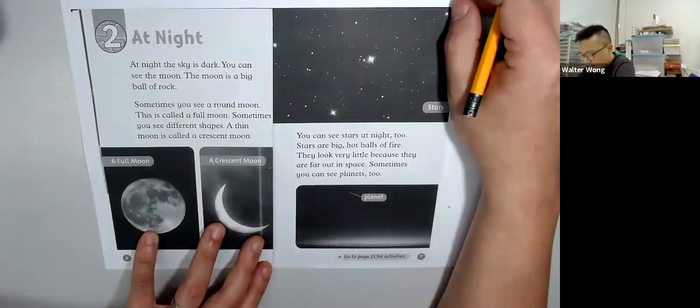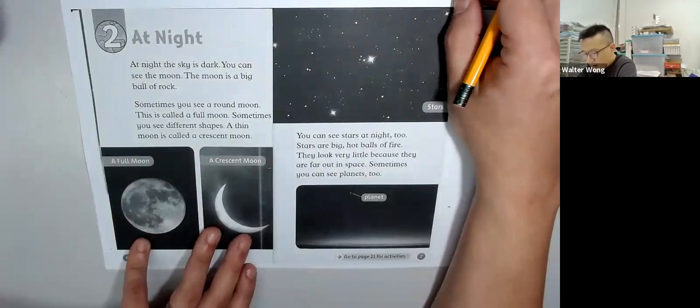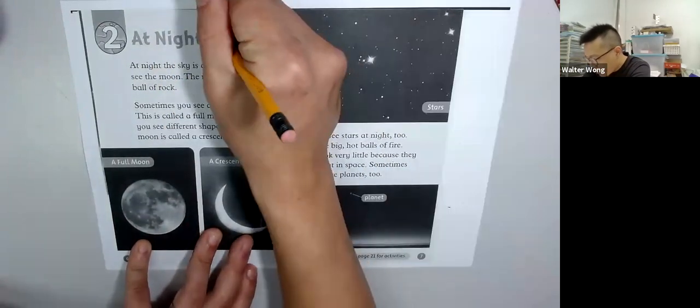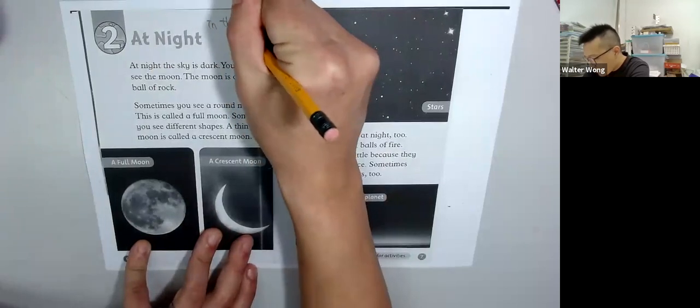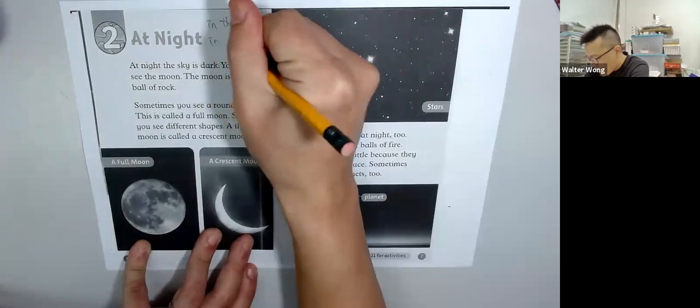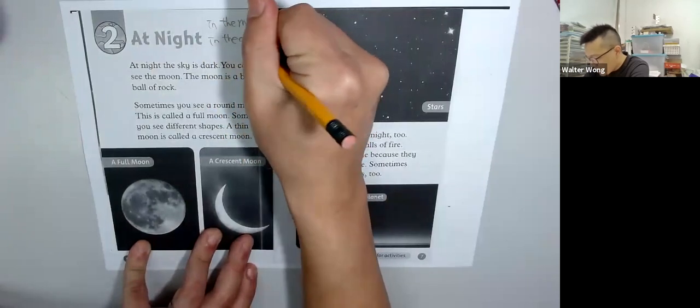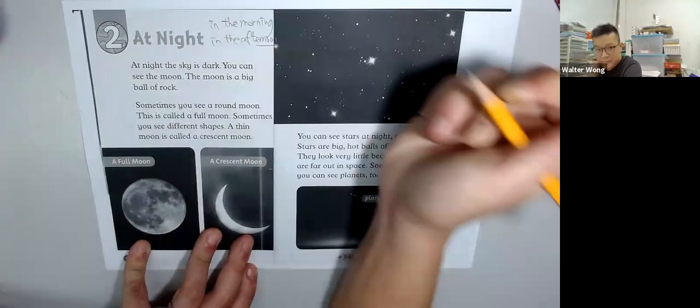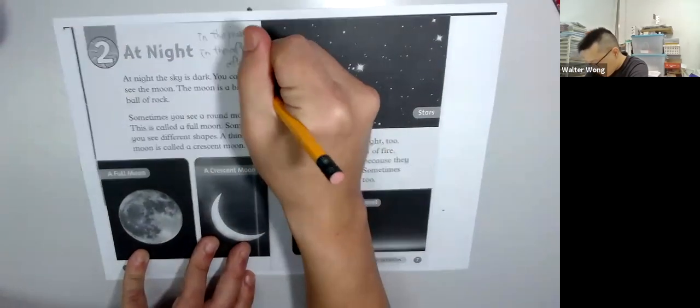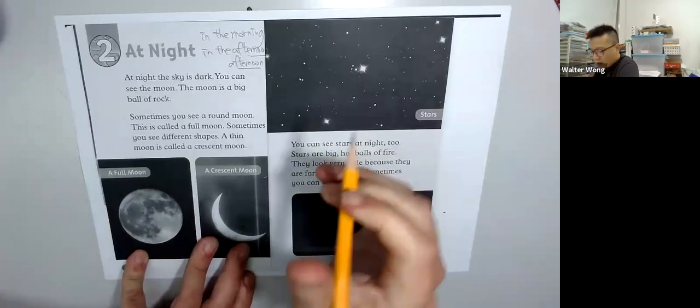At night, the sky is dark. In the morning, in the afternoon, at night, the sky is dark.